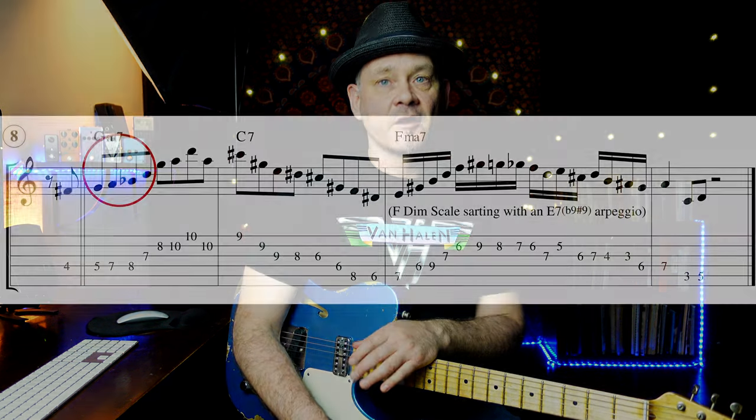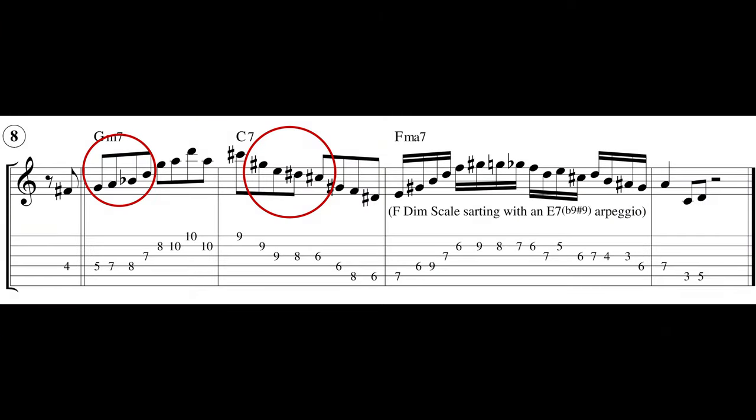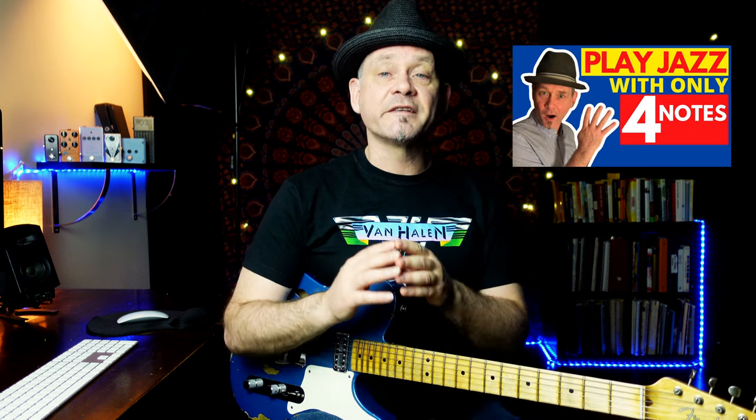In this example, we're using a four note cell for both the G minor and the C7 measures. For the G minor, notes are G, A, B flat, D. For the C7, we're playing a C sharp minor cell. C sharp, D sharp, E, G sharp. That gives you an altered sound. For more information on this four note cell idea, you can learn much more about it by watching this video. It also has a great downloadable PDF.